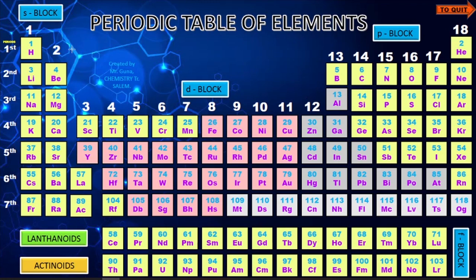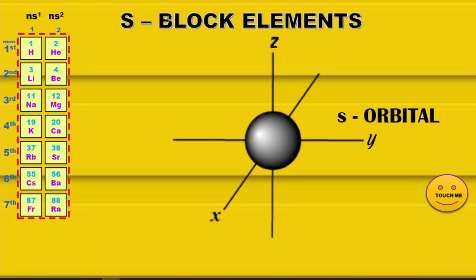This is the main periodic table, presented in the form of interactive buttons. You can click any block — S block, P block, D block, F block — and be taken to that particular block. You can also navigate by group, from group 1 through 18, to reach the characteristics of each group.